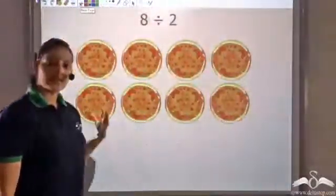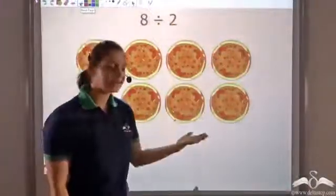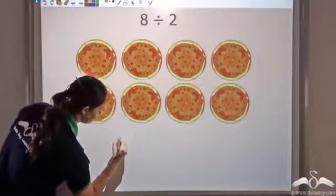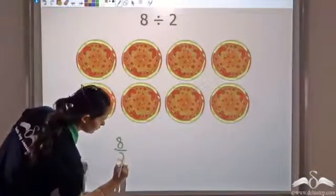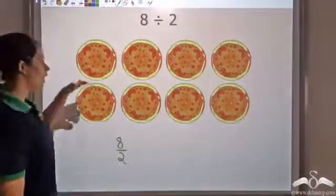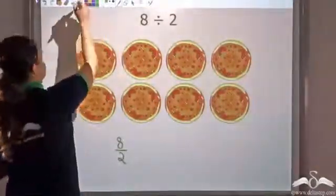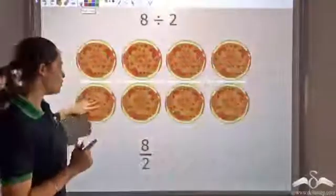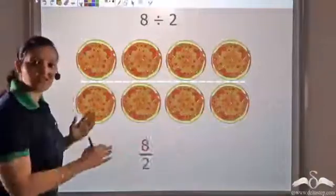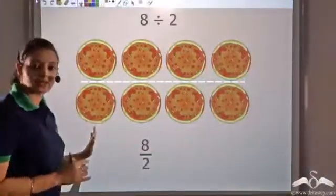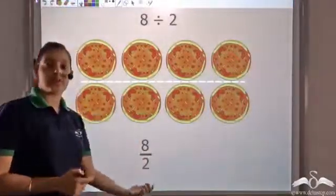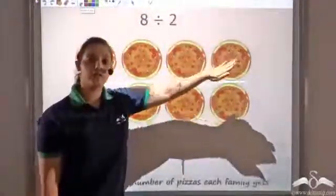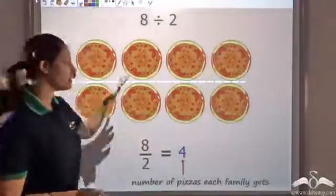Let's say I have these eight pizzas and I want to divide them among two families. Eight divided by two can also be written as eight by two. So I draw a line here and divide: four pizzas go to one family and four to the second family. Each family gets four. That is precisely what eight divided by two tells me — the number of pizzas that each family would get.